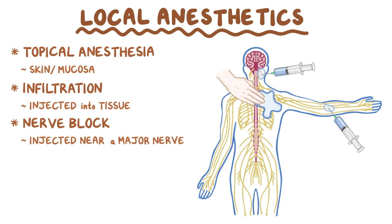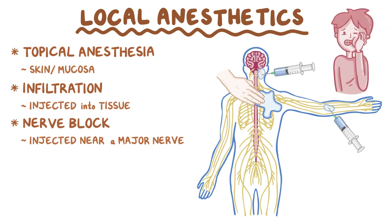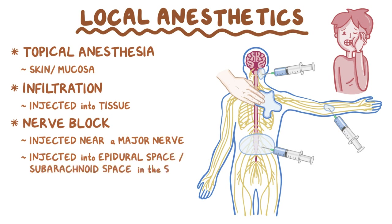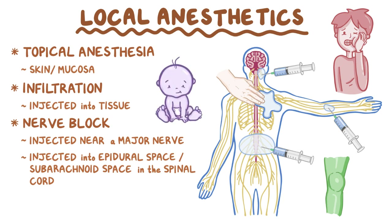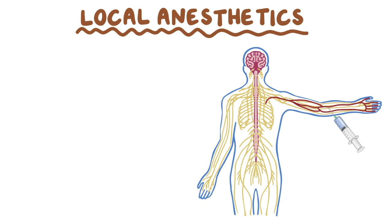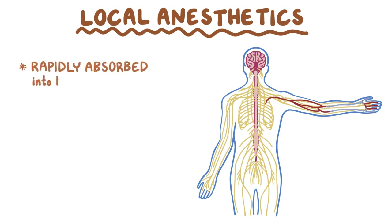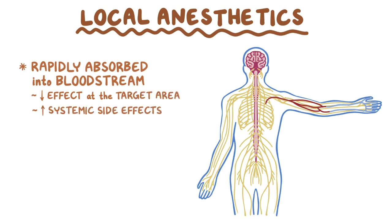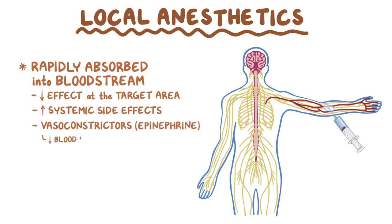These are frequently used for minor procedures like getting your tooth pulled or having a polyp removed from inside your nose. Local anesthetics can also be injected into the epidural space or the subarachnoid space in the spinal cord to numb larger areas — useful for orthopedic procedures, C-sections, or pain management during child delivery. Once administered, local anesthetics are rapidly absorbed into the bloodstream, which decreases the effect at the target area. To correct this, vasoconstrictors like epinephrine are given to diminish blood flow to the site.